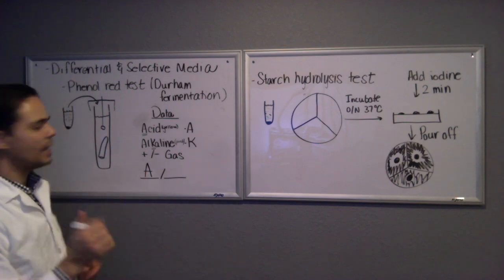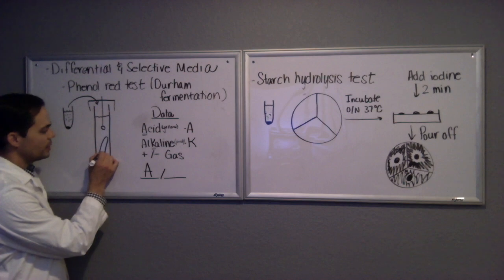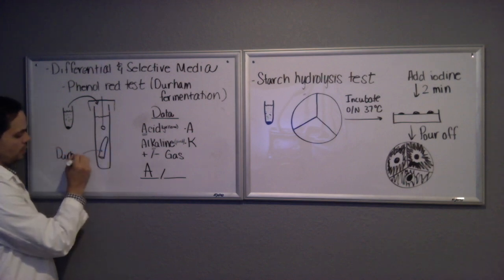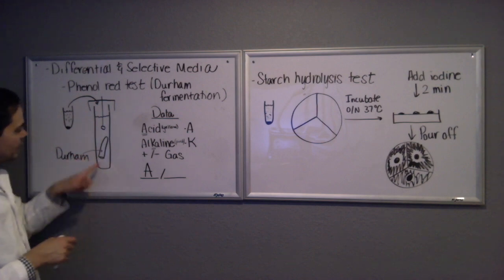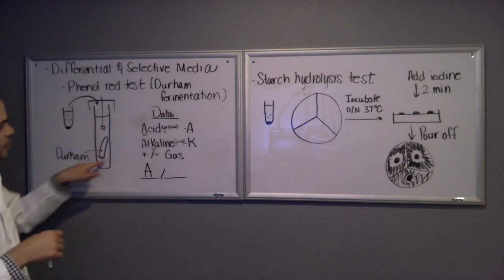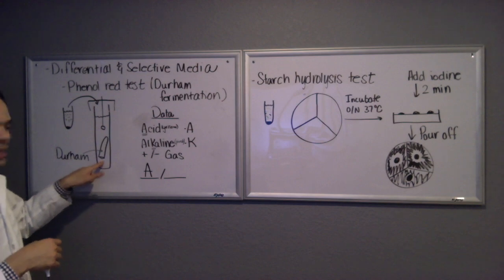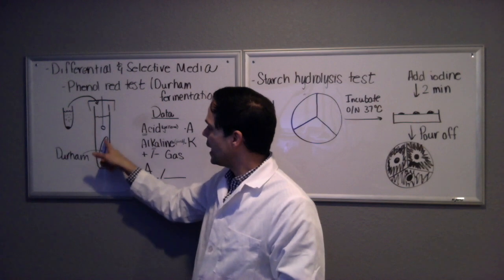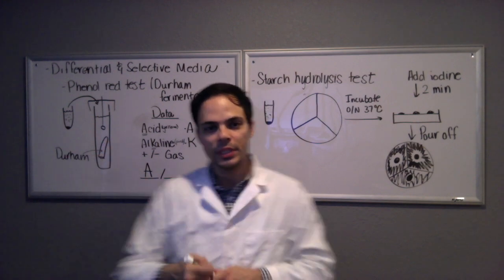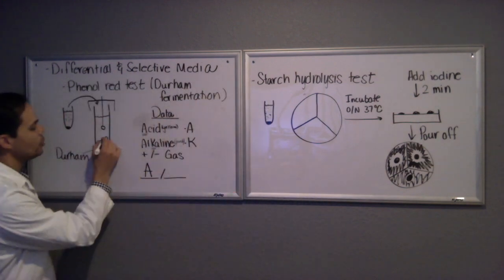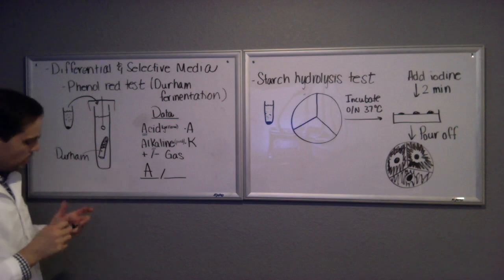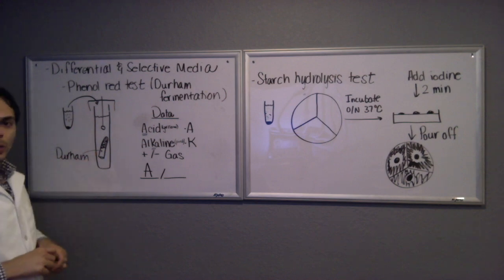The second thing you want to look at is this little tube in here. This little tube here is called a Durham tube, and it's upside down inside of this bigger tube. What it does is that it'll catch any gases that are made during the fermentation process and it will actually fill with bubbles in there.